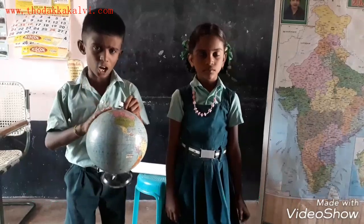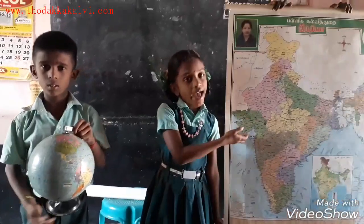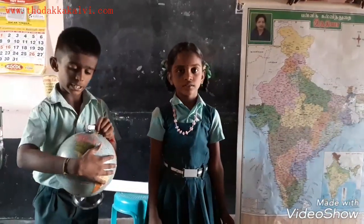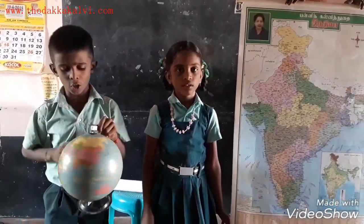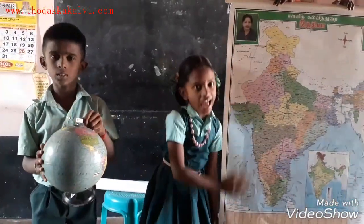It is a globe. It is a map. The globe is round. The map is flat.